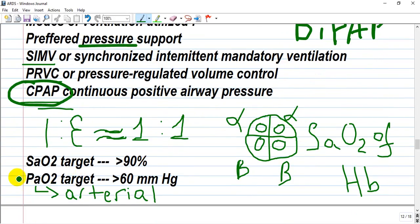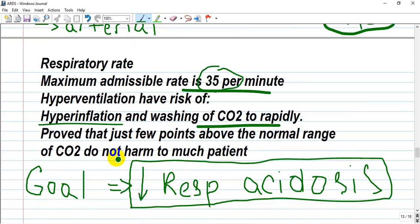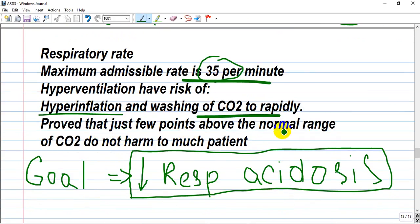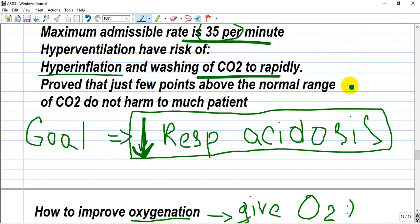What is the target of saturation and partial arterial pressure of oxygen? Saturation more than 90% with a set of parameters and partial arterial oxygen pressure more than 60 mmHg. Also, we require a good hemoglobin level because even an adequate level of hemoglobin and erythrocytes can deliver required oxygen. Respiratory rate: maximum admissible rate is 35, not more. Because hyperventilation has risk of hyperinflation and washing of CO2 too rapidly. We have to wash CO2 but not too rapidly. And it's proven that just a few points above the normal range of CO2 do not harm the patient too much. So the goal is decreasing acidosis by increasing pressure to make good ventilation and gas exchange with high oxygen.